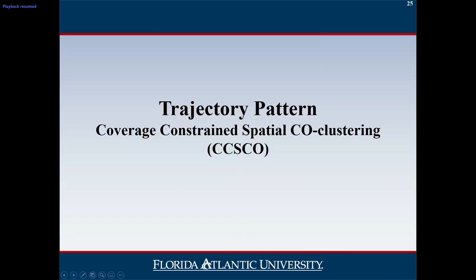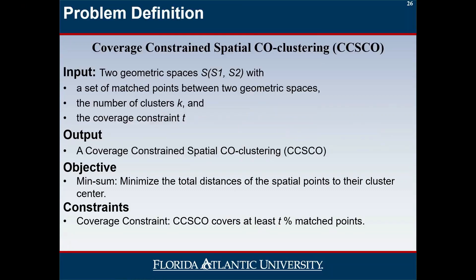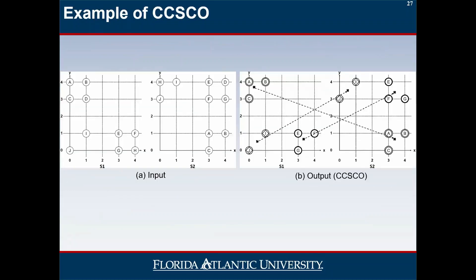The third query is a data mining query. Given two geometric spaces and trajectories, the output is groups of trajectories that help identify interesting traffic patterns. Figure A shows two geometric spaces between two time steps — point A moves to the left bottom corner and point E moves to the right top corner. We can group these trajectories to identify interesting traffic patterns.